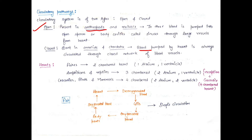Next, let's look at which organisms have which chambered heart. Fish have a two-chambered heart with one atrium and one ventricle.